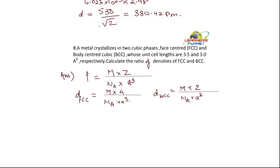So if I divide the two expressions, that is density FCC by density BCC, because I have to find out the ratio. So density FCC by density BCC is equal to 4M by Na into, what is the edge length of the FCC? 3.5 cube multiplied by Na into 3 cube divided by 2M.